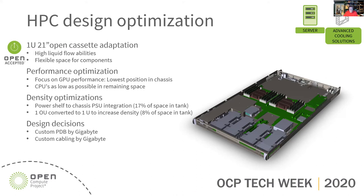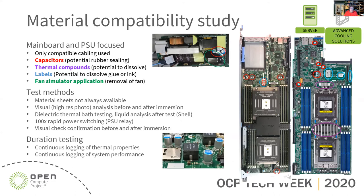In all these collaborations, before even touching liquid, the very first thing addressed with physical materials is material compatibility. In every platform we document exactly where suspect materials can be found. Most of the time we look out for capacitors, thermal compounds, labels, and fan simulator applications. Power supplies very often cannot operate without fans present, but you don't want fans in an immersed system. Cutting off those fans and applying fan simulators — which are also part of the OCP specs — is one way to deal with that.